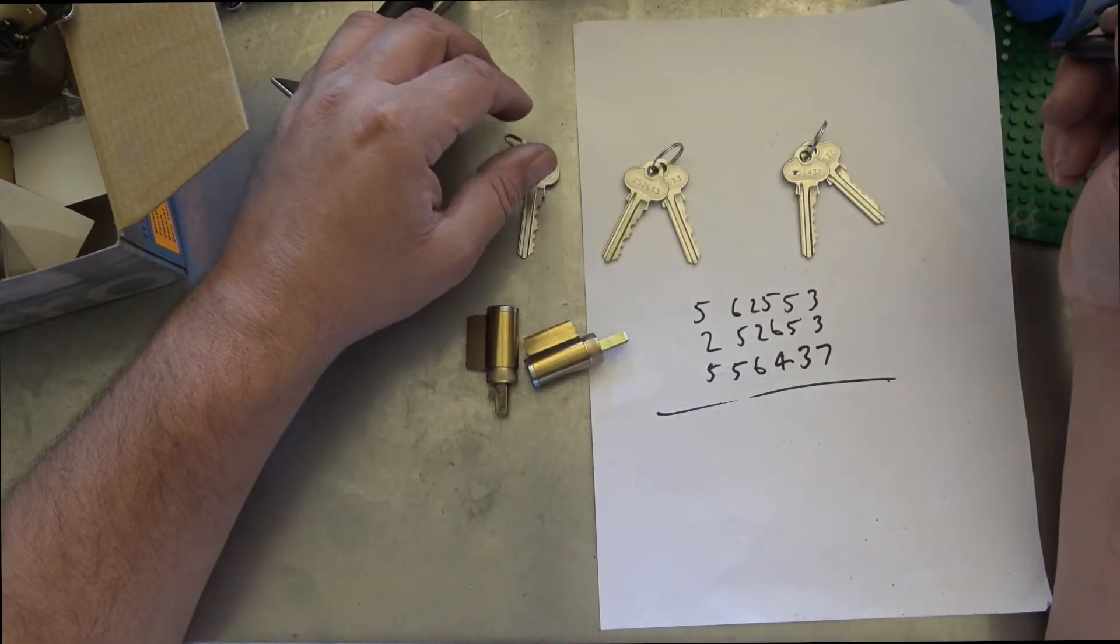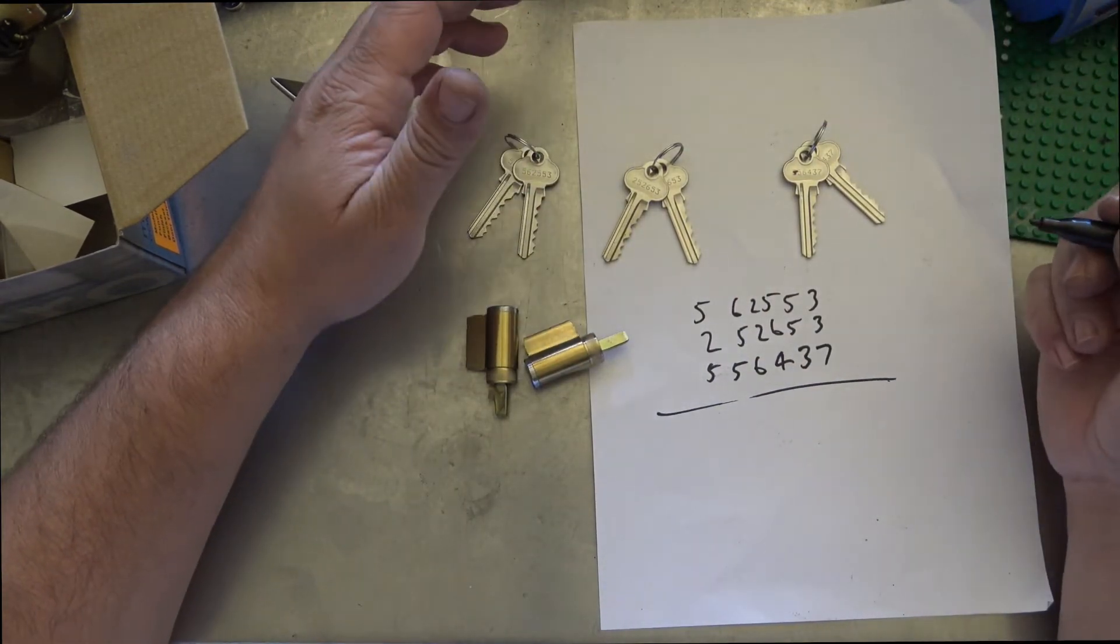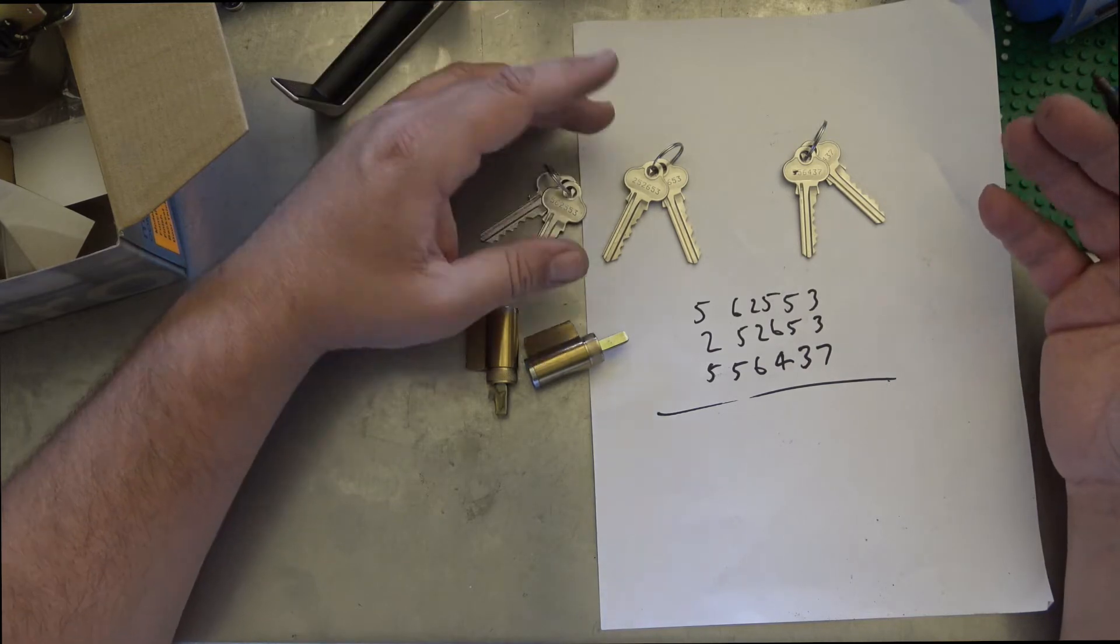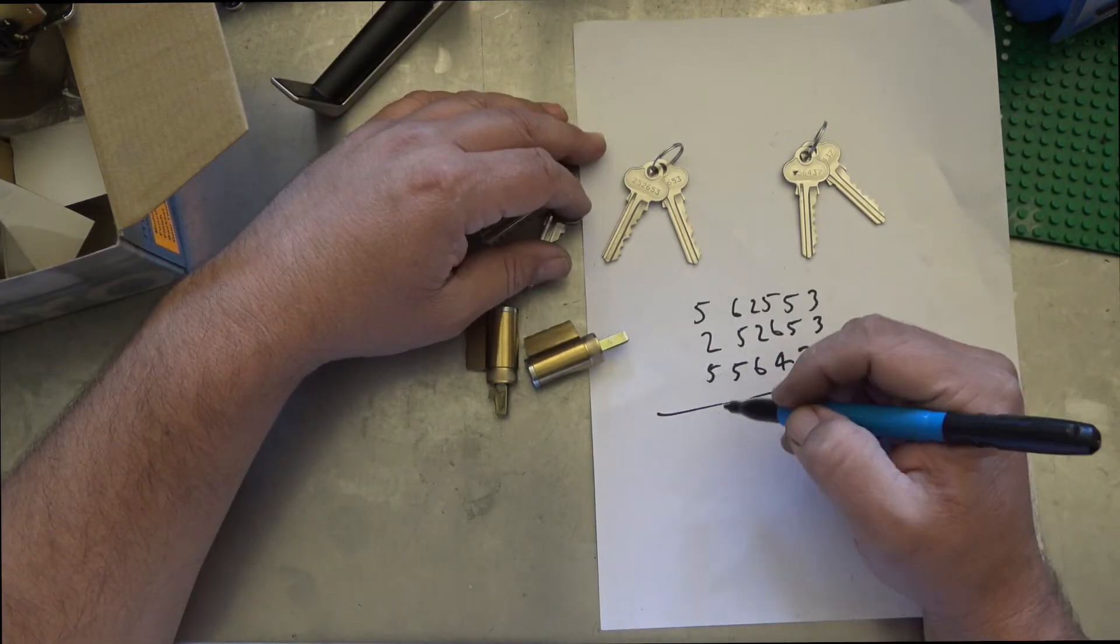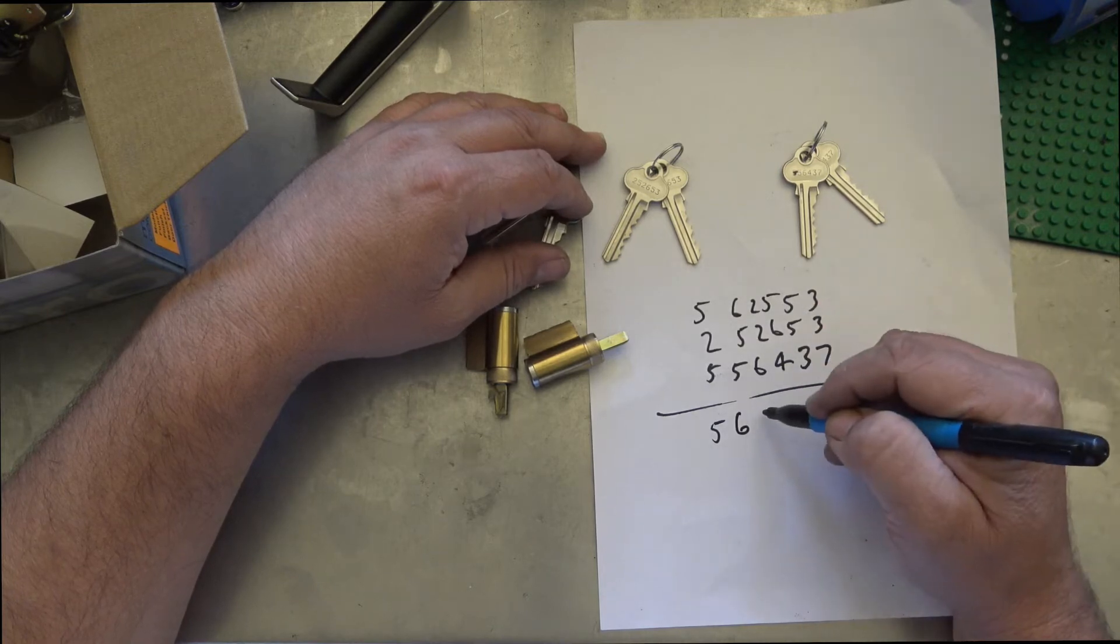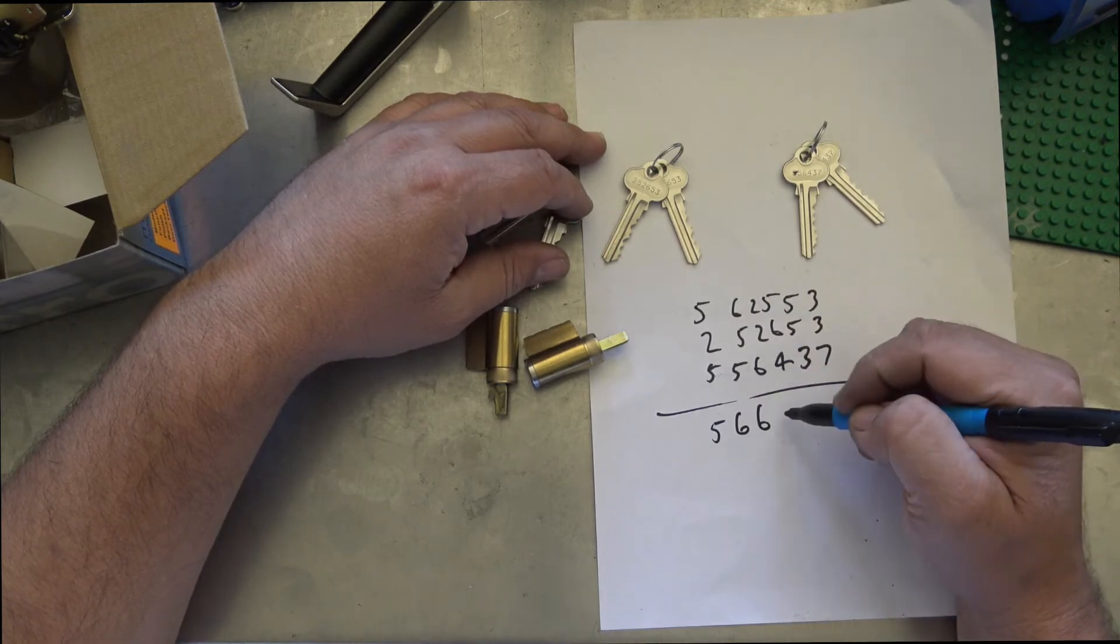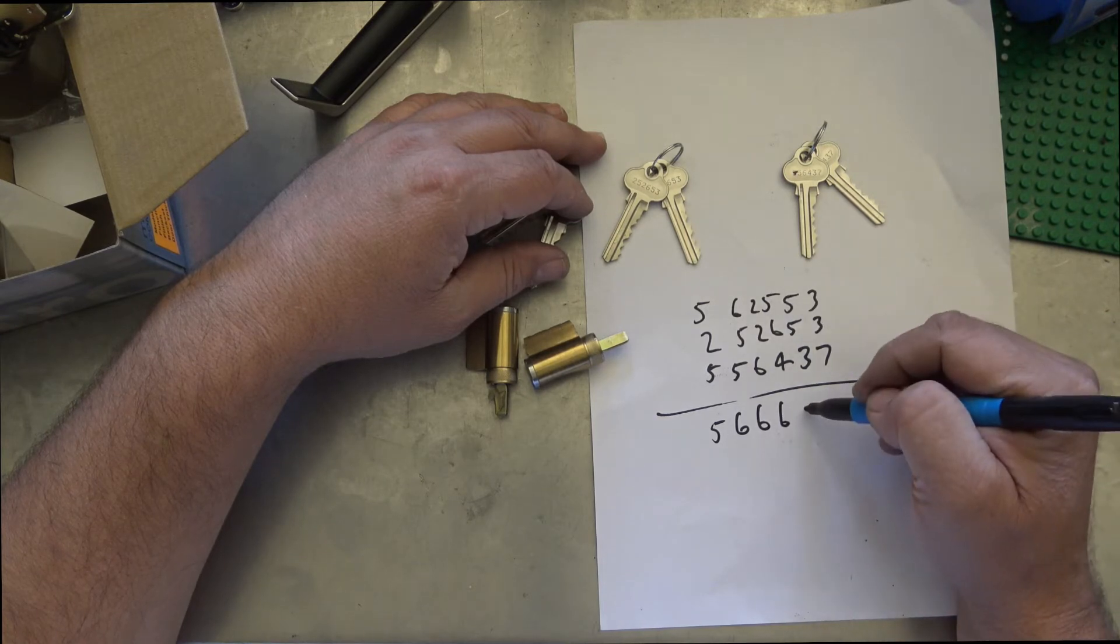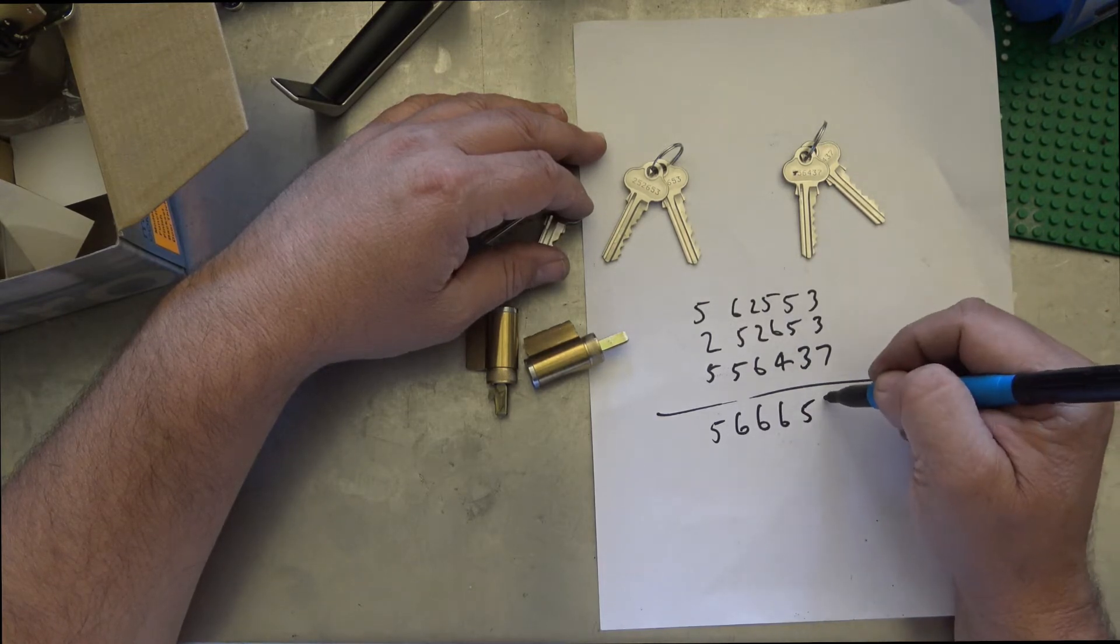So the best way of doing this to save the key blanks and all the rest and not cost us any more money is to find the lowest cuts here. So the lowest cut here is a 5, then I come along here the lowest cut here is a 6, the next cut here is a 6, lowest cut here is another 6, lowest cut here is a 5, and then the next cut here is a 7.